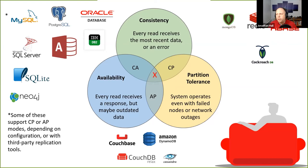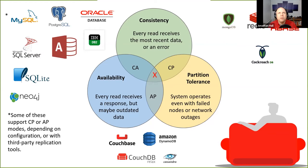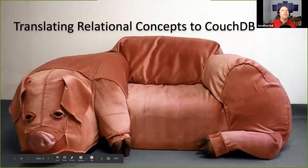CouchDB is perhaps most popular for offline-first applications. A great real-world example: during the Ebola outbreak in Africa, a lead CouchDB developer helped with health tracking for people in the field where there was very poor or no internet. They used mobile phones and tablets with CouchDB to track patient records, and when an internet connection was available, they synchronized with the central server to share data with the rest of the world for aggregation. Any sort of mobile app that needs to do data tracking is a great use case.